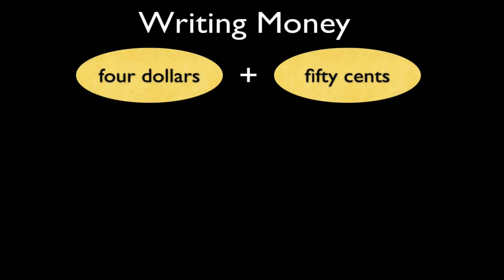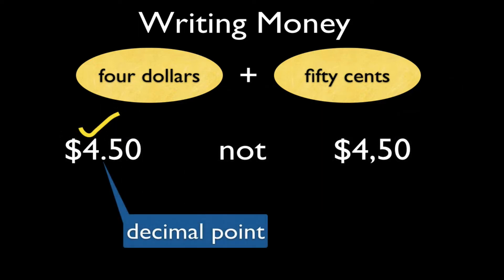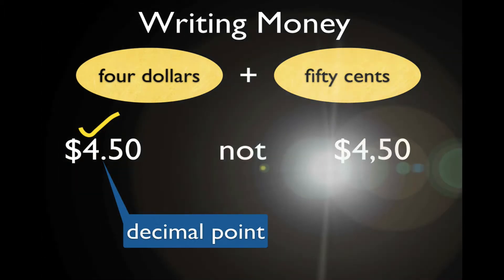So if we're looking at writing money, here we've got a number, four dollars and fifty cents. Then we'd have to show the difference between the cents and the dollars with a decimal point, not with a comma.